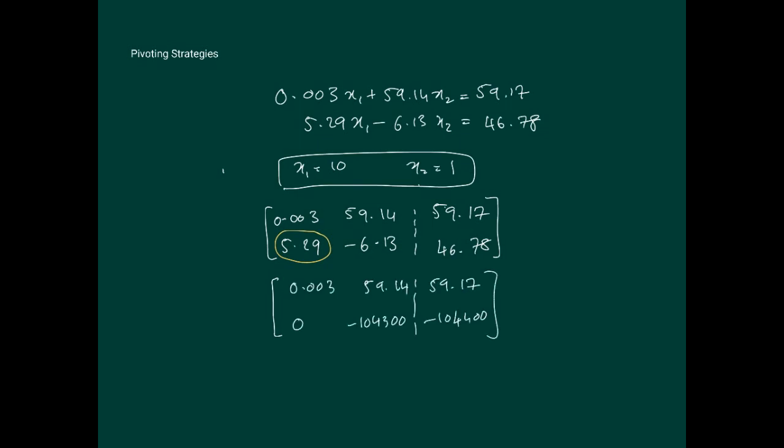If I apply Gaussian elimination, I end up with this matrix. You need to look at this number here and this number here - these are very big numbers. The culprit is the 0.003 pivot element. This is the problem: this number is smaller than everything else in the matrix, and because of its significantly small size compared to everything else, it's causing a lot of problems.